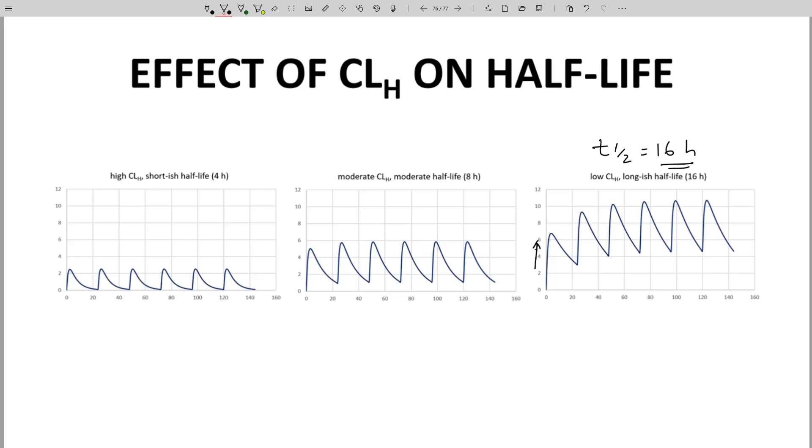Something else is affected by hepatic clearance: bioavailability, F. So F is large for this compound. F equals 0.85, 85%. We get a high F because our hepatic extraction ratio is small.